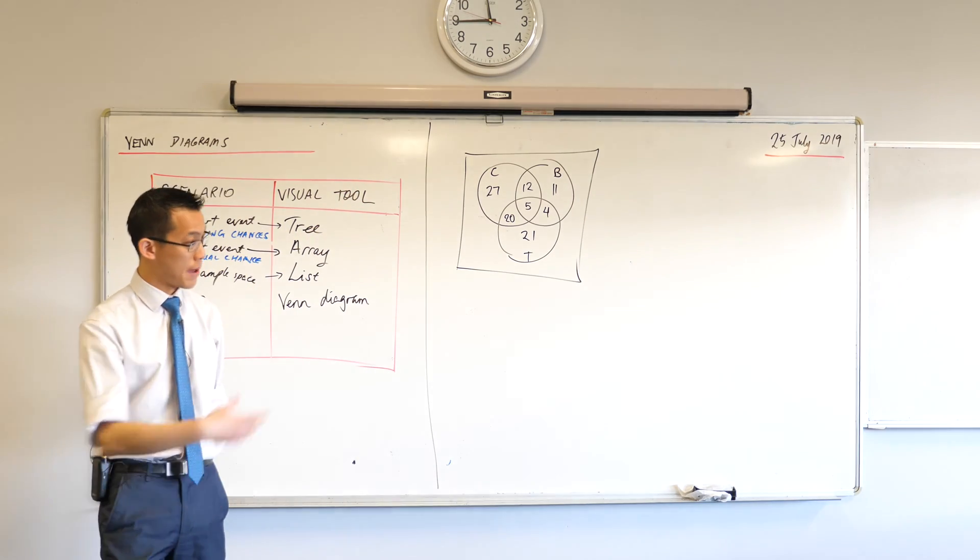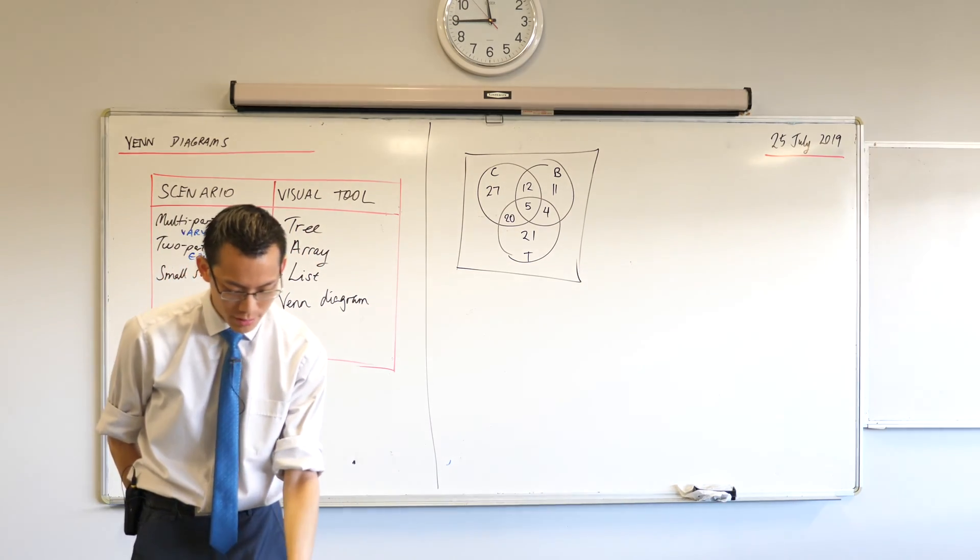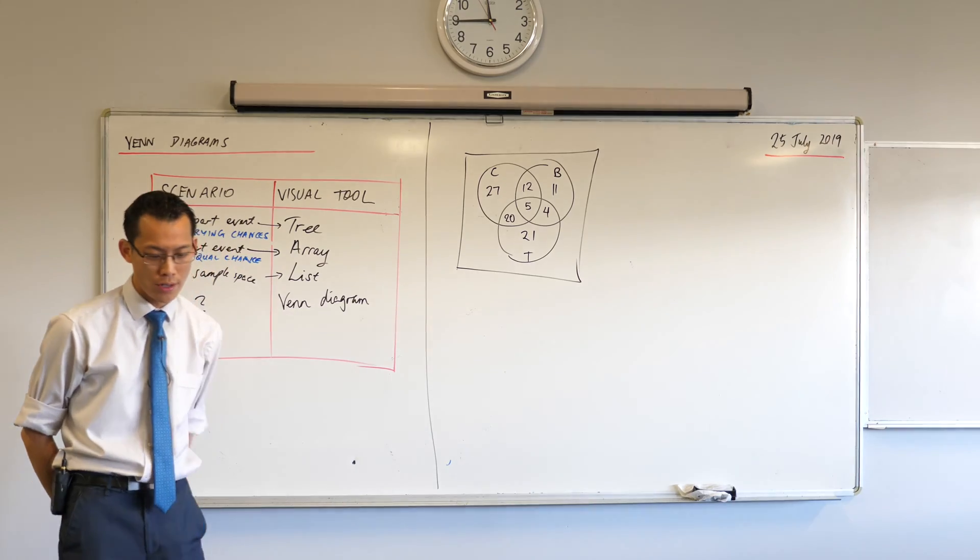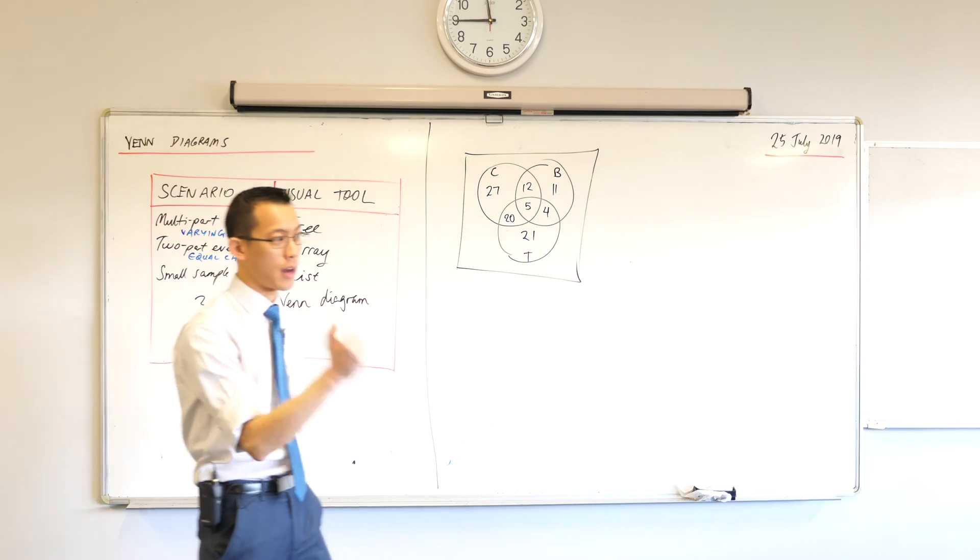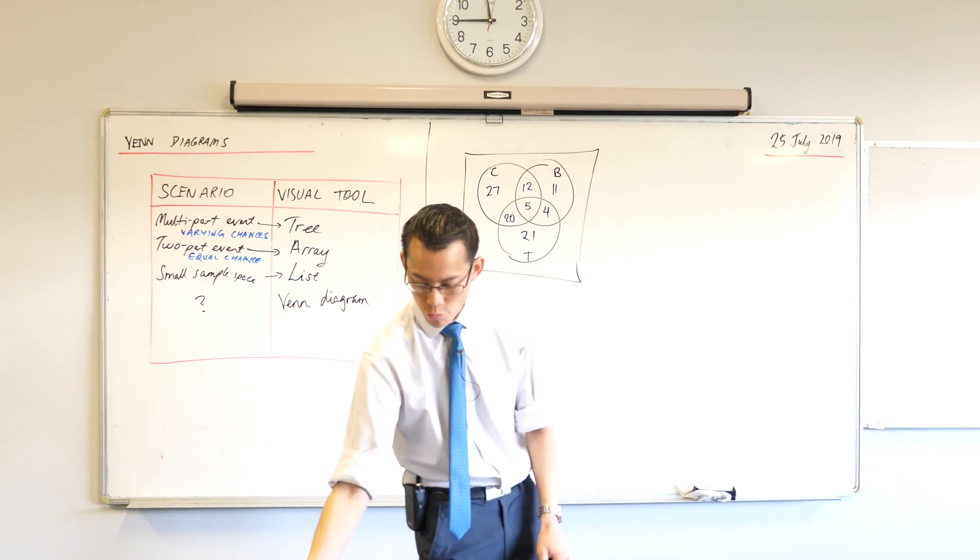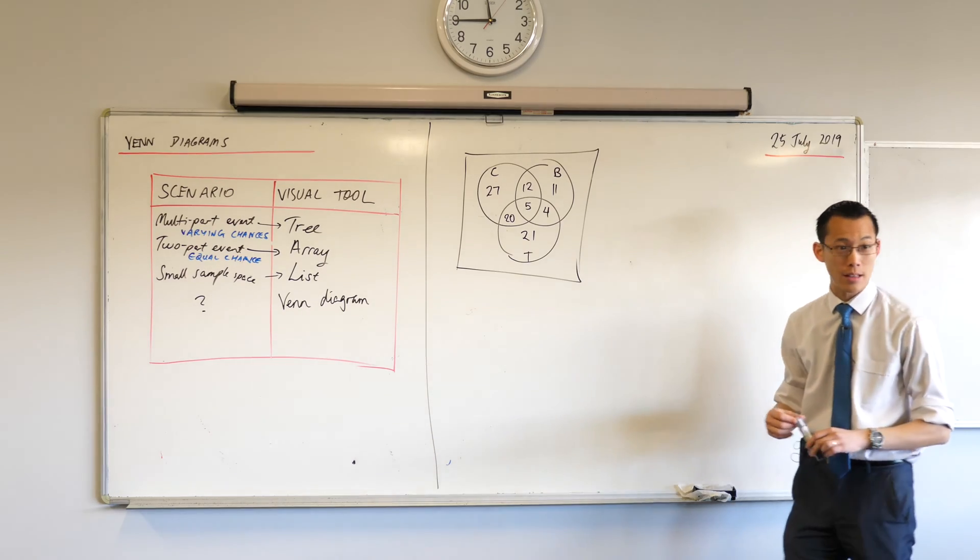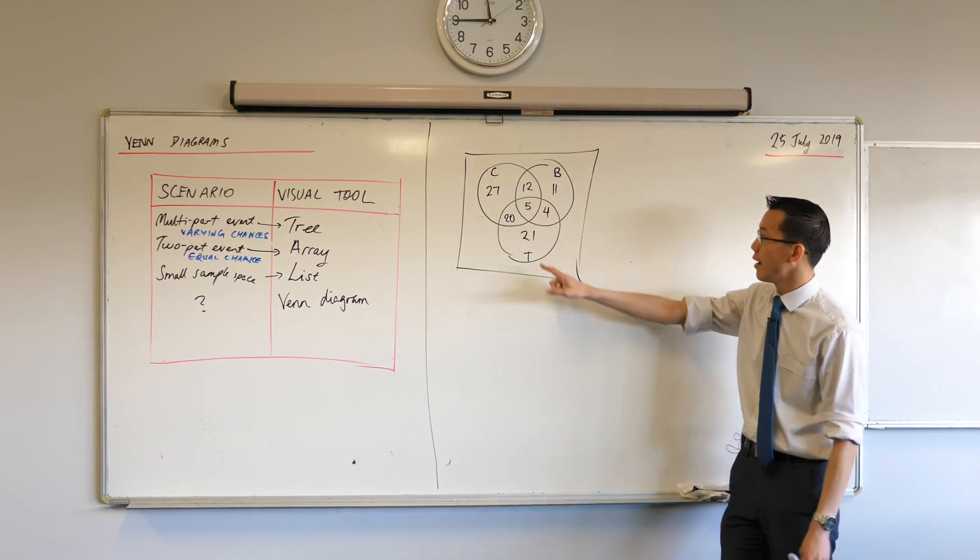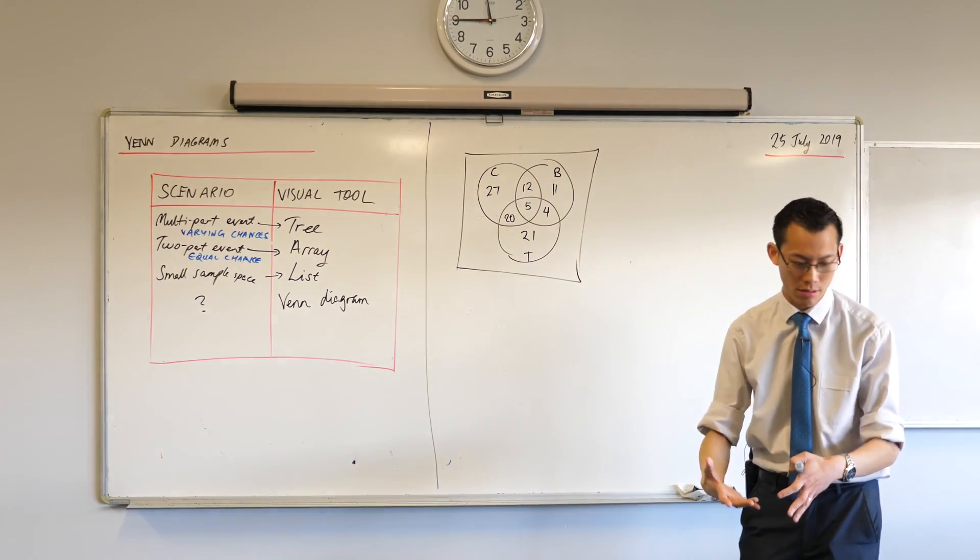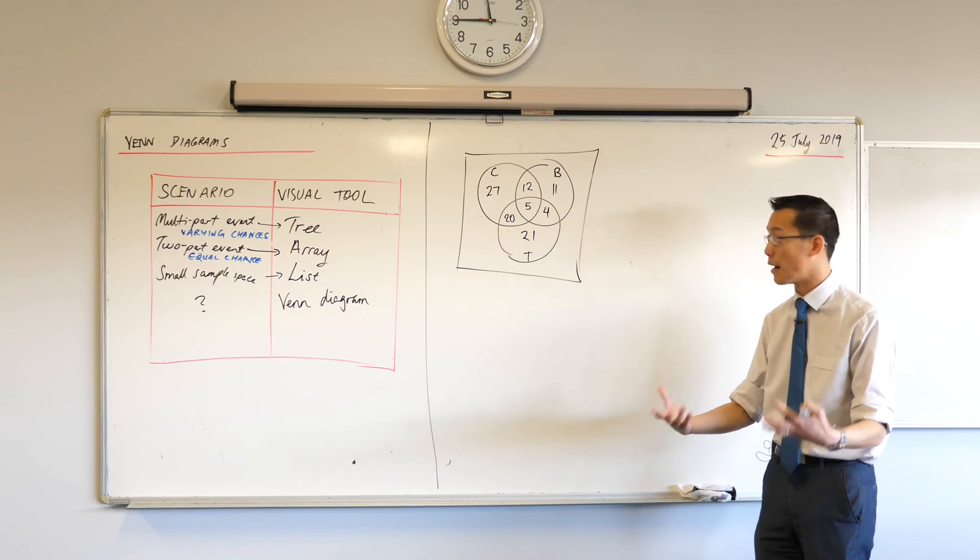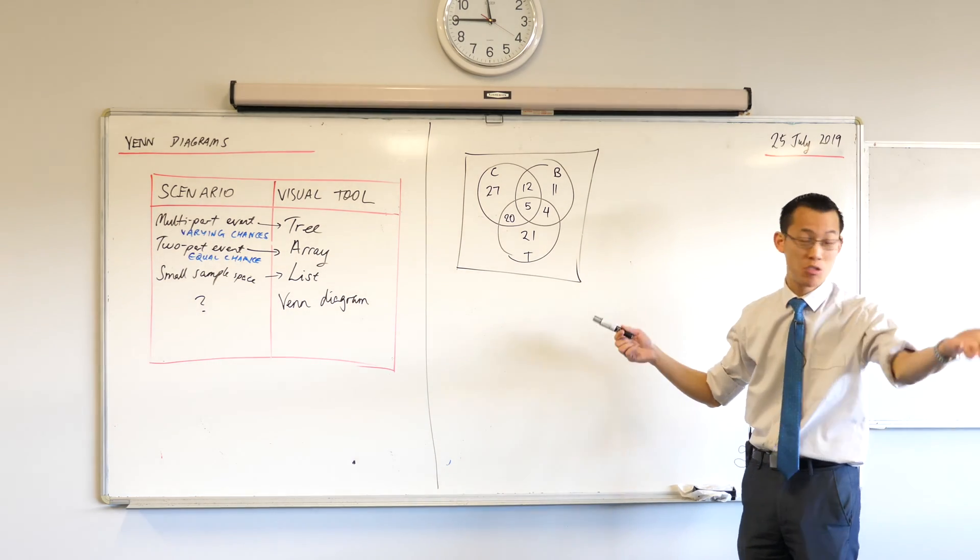Once you've done so, let's start to unpack these questions together and understand what the situation means. It says, this Venn diagram shows the results of a survey on how people commute, how they get to work. So the C, B, and T, they stand for car, bus, and train. The first question is, how many people participated in the survey?